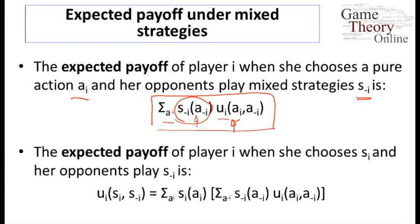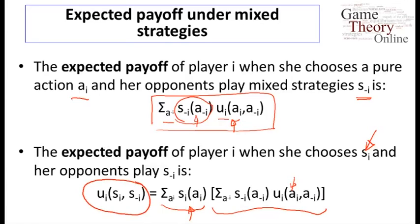If we want to figure out the payoff for a particular randomization for a given player, we take the expected payoff for each given action and sum across how much weight they're putting on each action, arriving at an overall expected payoff. We can keep track of U for the full profile of mixed strategies as opposed to just pure strategies — this is a direct extension where players maximize expected payoffs given probability distributions over actions.